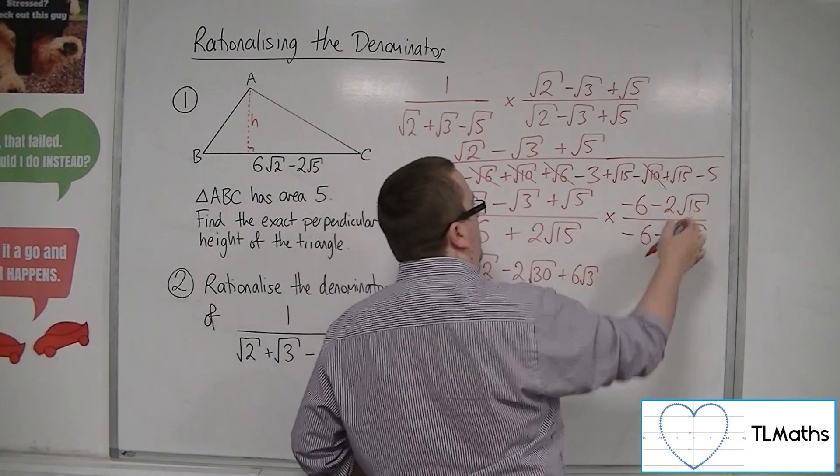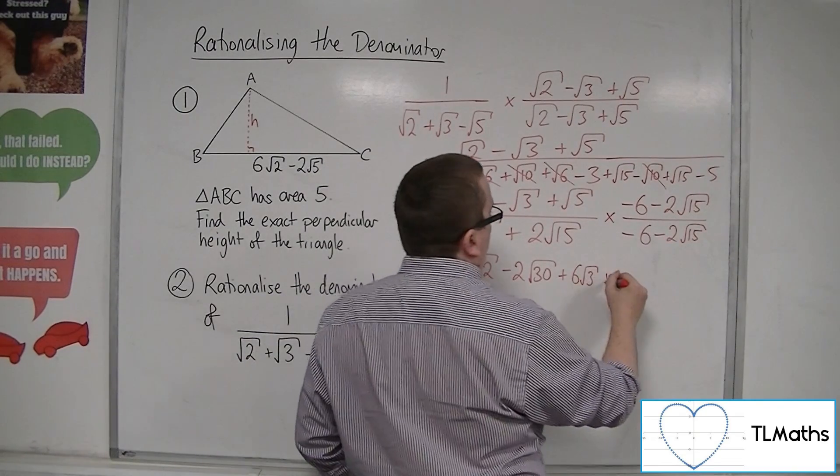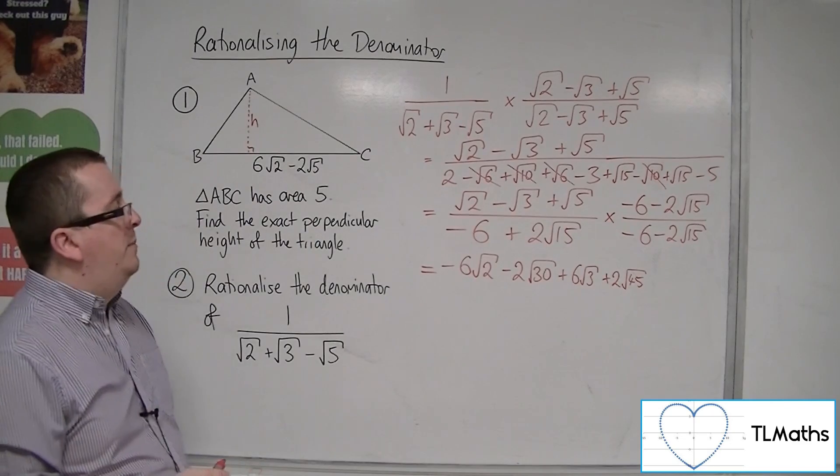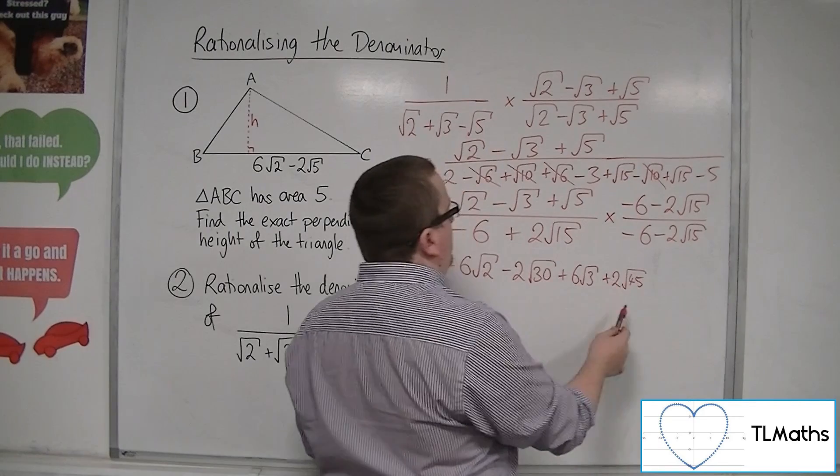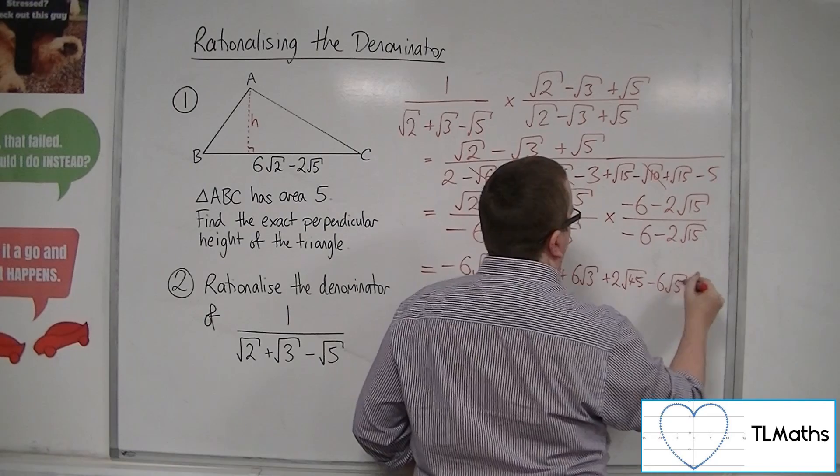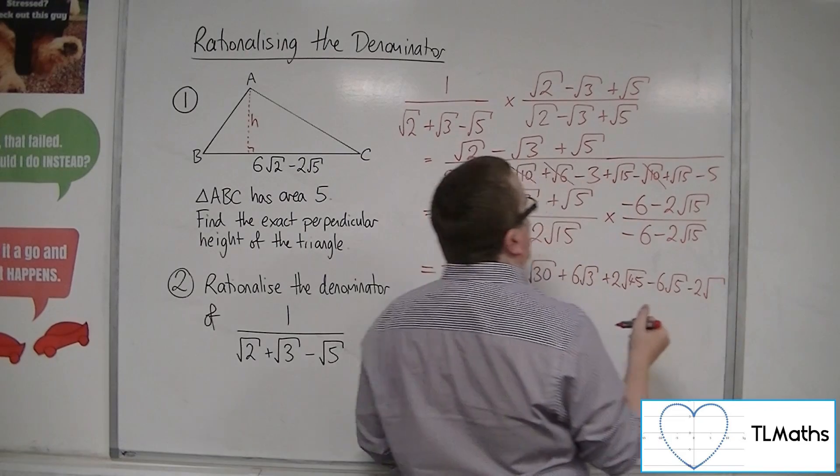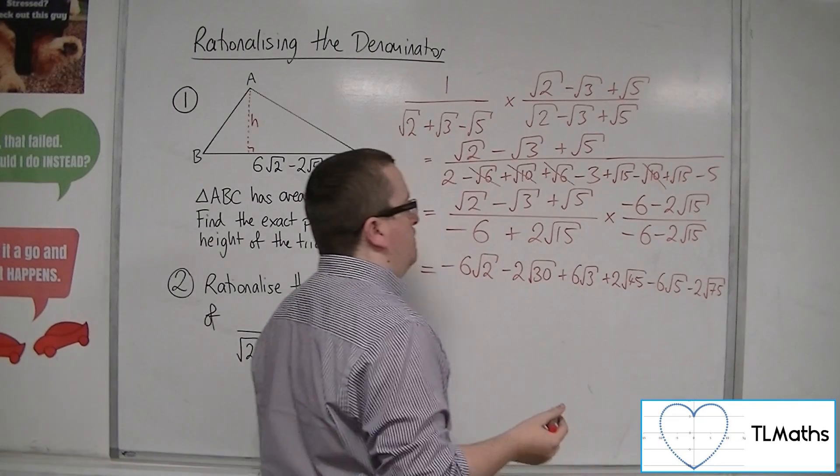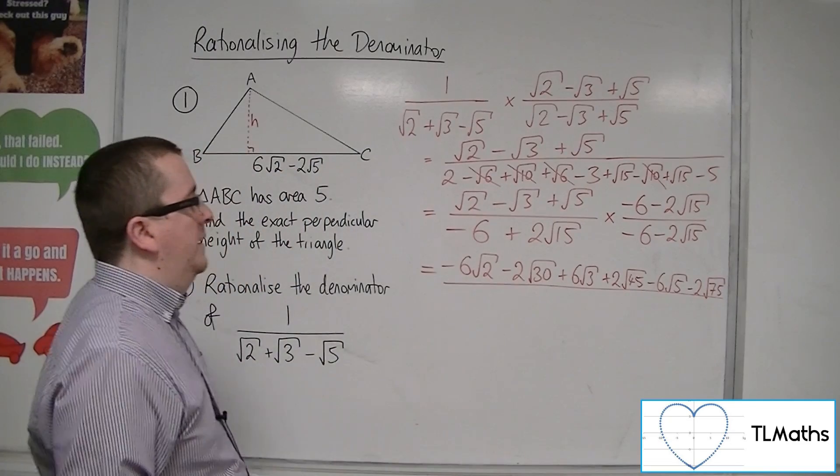And minus root 3 times minus 2 root 15. So, we're going to have minus 2 root 15 times root 3, so minus 2 root 45. And then we've got minus 6 root 5. We've got minus 2 root 75. That also can be simplified, but I'm just going to leave it alone for the moment.